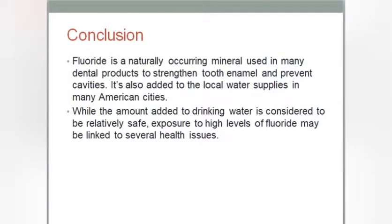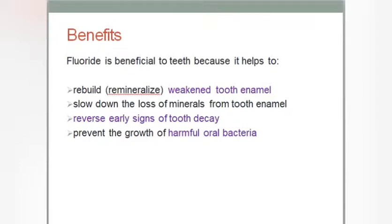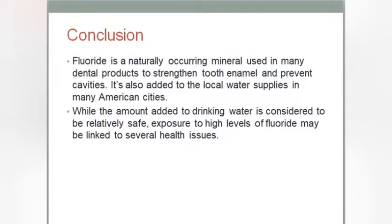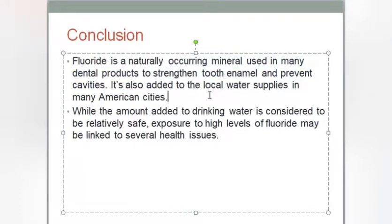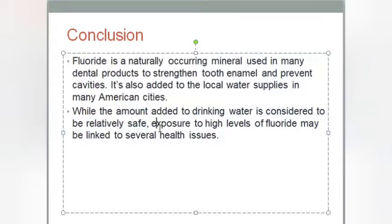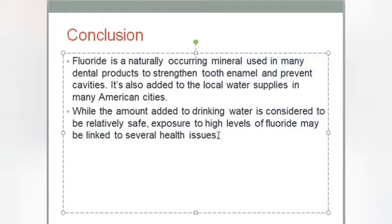In conclusion, this is some basic information about fluorine and the human body. Fluoride is a naturally occurring mineral used in many dental products to strengthen tooth enamel and prevent cavities. It is also added to local water supplies in many cities. While the amount added to drinking water is considered relatively safe, exposure to high-level fluoride may be linked with several health issues, such as skeletal fluorosis and dental fluorosis.